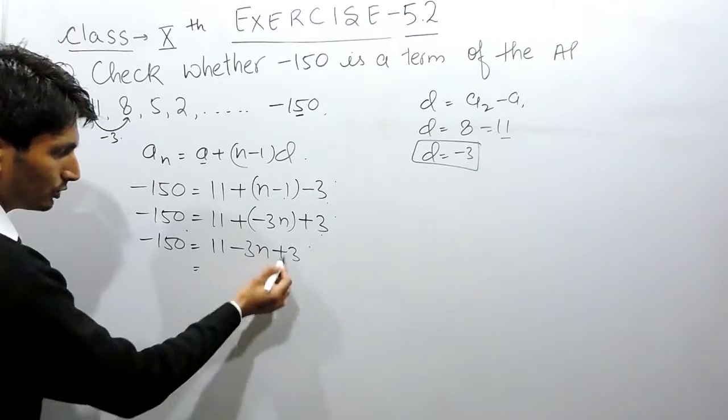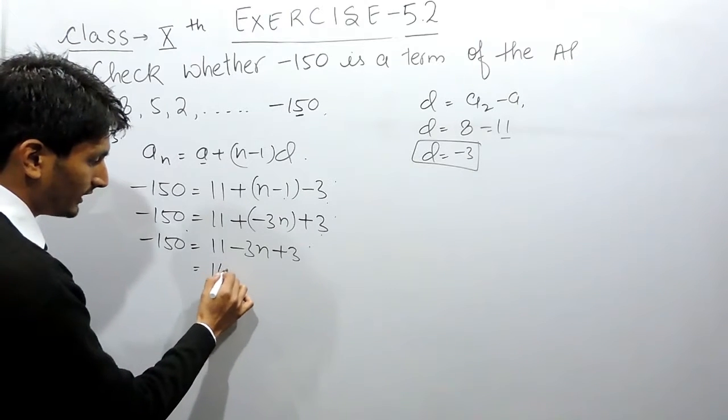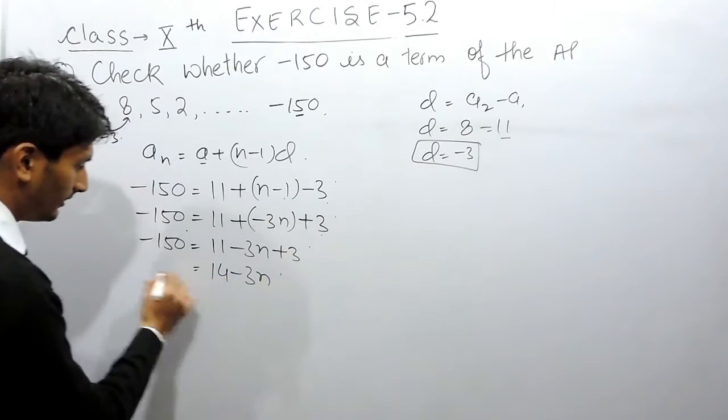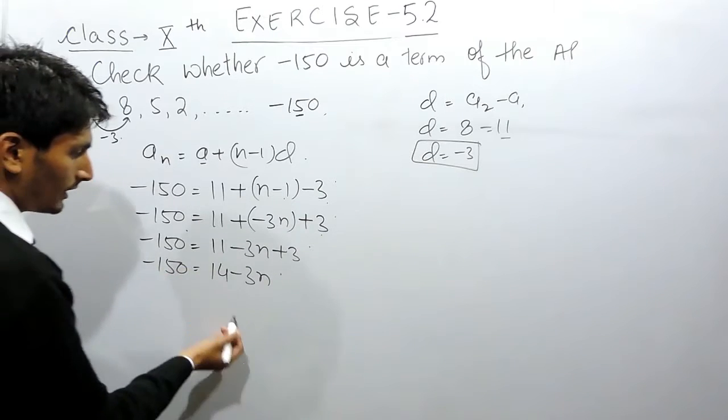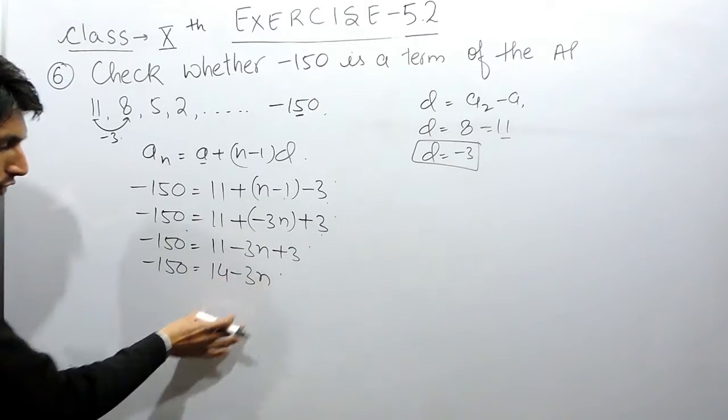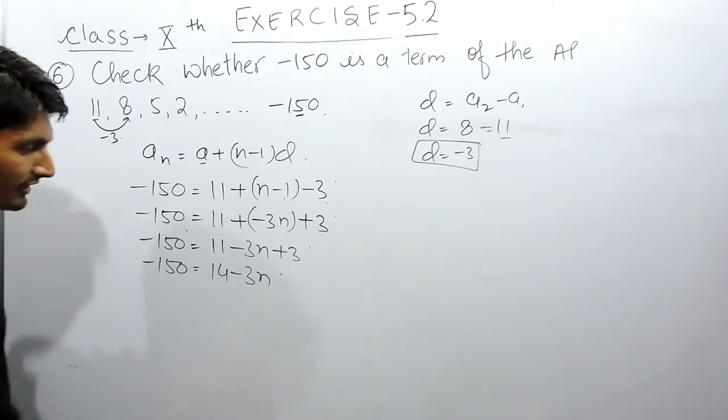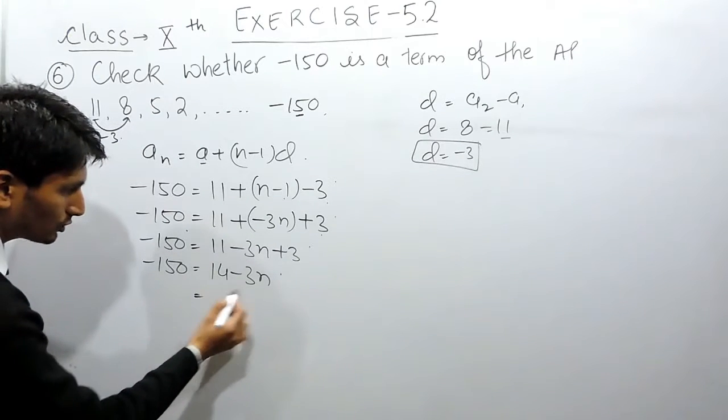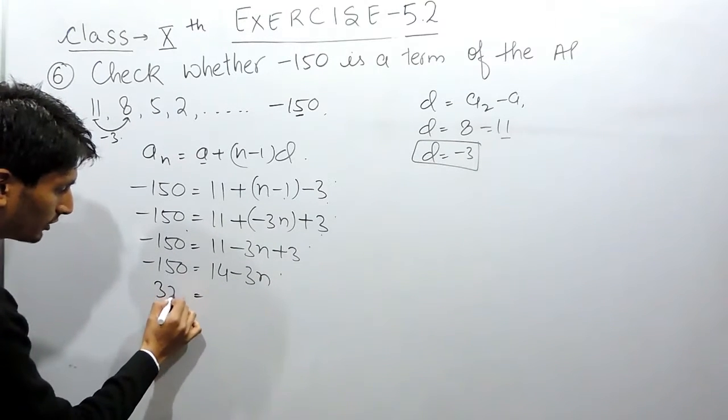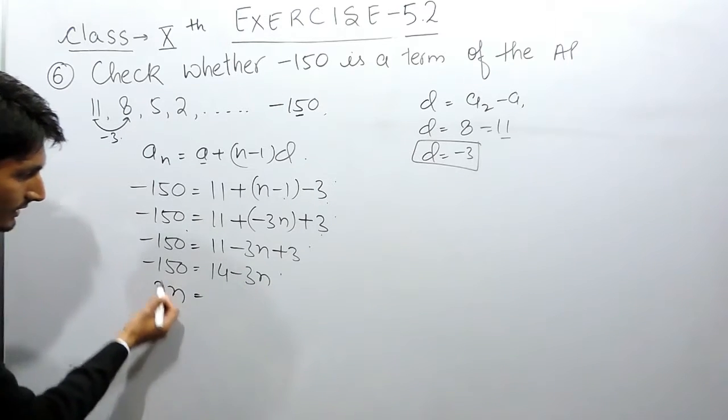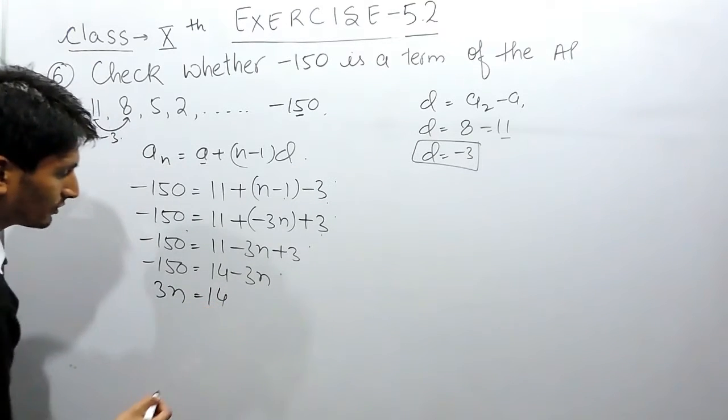This 3 can be added to this, so 11 plus 3 is 14, and this is -150. Now if you want to solve this, we have to shift all the constants to one side and all the variables to one side. So if I shift this variable to this side, this will become plus.